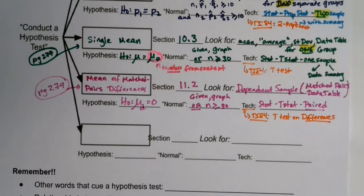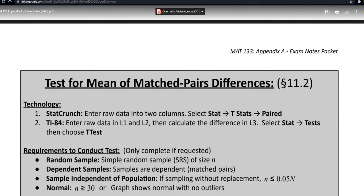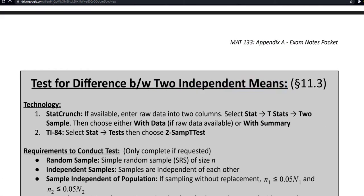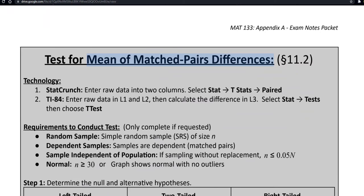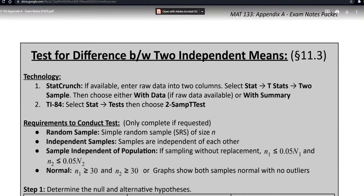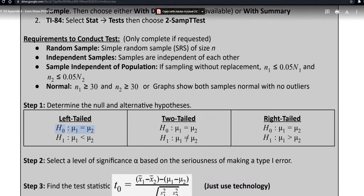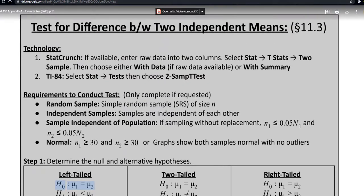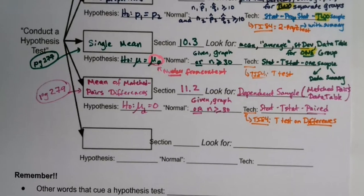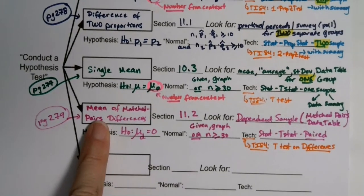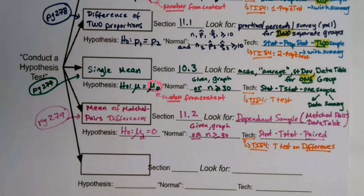The last one is its own thing — it's for independent means. This one is the difference in two separate groups. Catch the distinction: the matched pairs one is about taking one group, looking at before and after, and finding the mean of those differences. This one is about two separate groups and how their means compare — the difference in two means. You find the two groups and then compare their means. They kind of work backwards from each other.